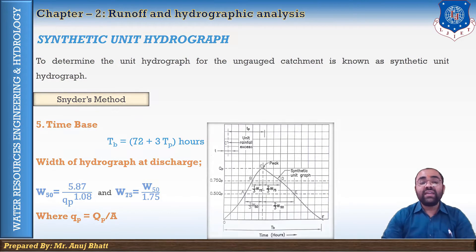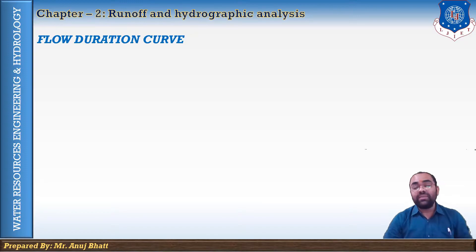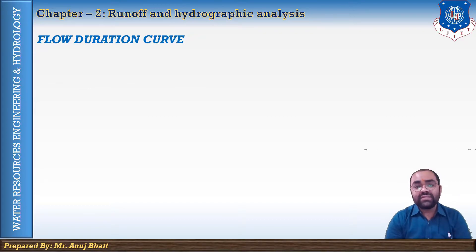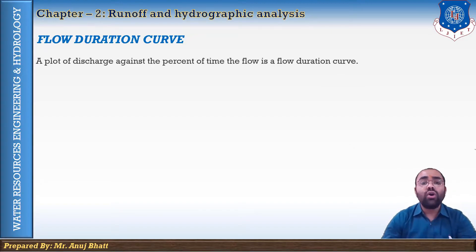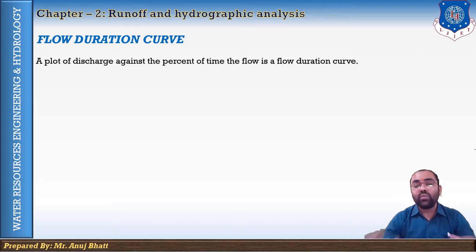The next concept in hydrograph analysis is the flow duration curve. The stream flow of any catchment varies over a water year. One popular method of studying stream flow variability is through the flow duration curve. A flow duration curve of a particular stream is a plot of discharge against the percentage of time that the flow is equal to or exceeding that discharge. This curve is also known as the discharge frequency curve.